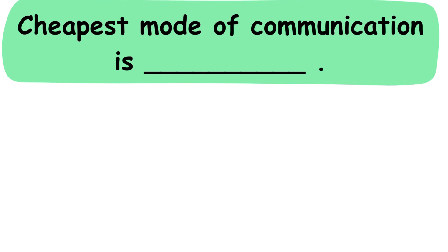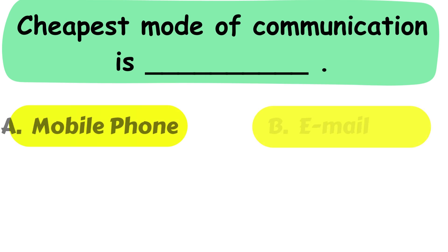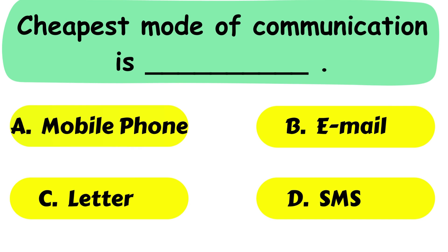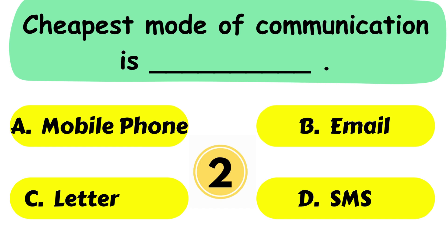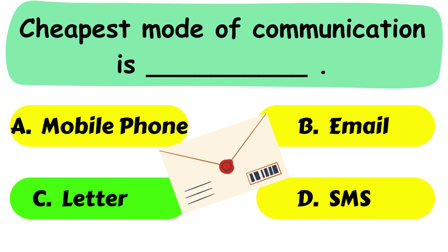Question No. 29. Cheapest mode of communication is dash. A. Mobile phone. B. Email. C. Letter or D. SMS. Correct answer is option C. Letter.